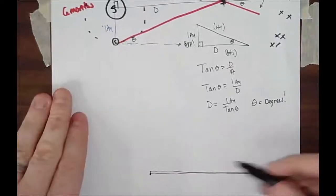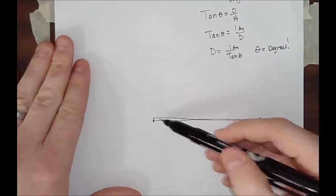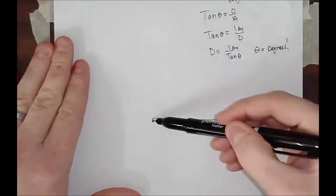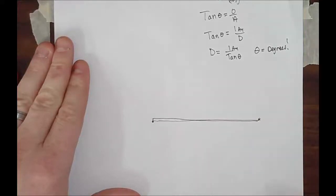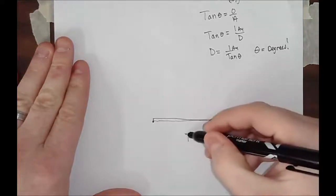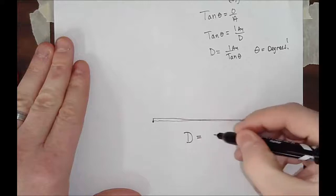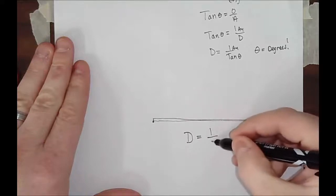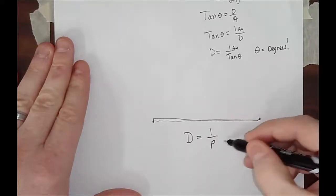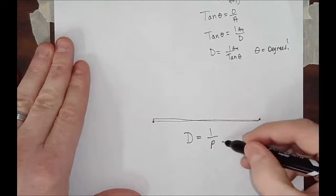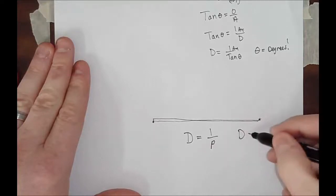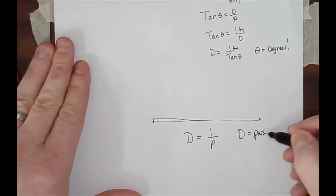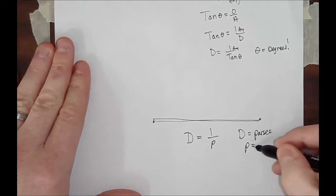Notice, our adjacent side, or I should say, our opposite side of the triangle almost becomes next to nothing. So, you can also see this formula here. The distance is equal to one over the parallax angle, well, the apparent change, and where D is in parsecs, and P is in arcseconds.